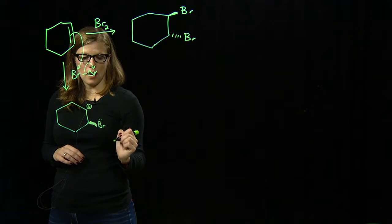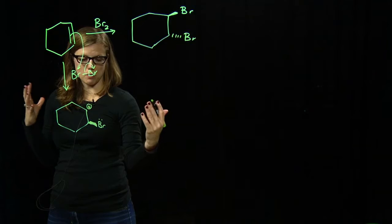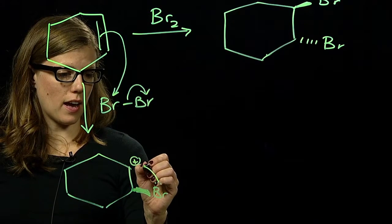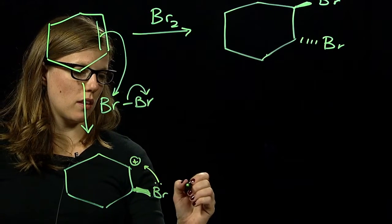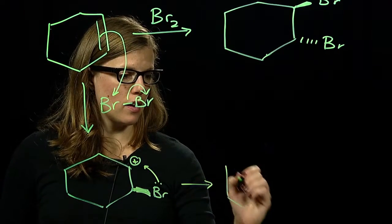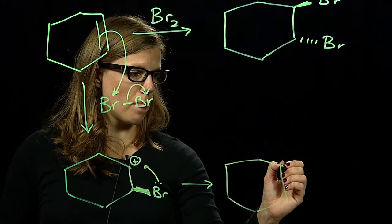But this bromine is large enough and has a big enough electron shell that it can actually interact with the carbocation to form a bromonium cation.